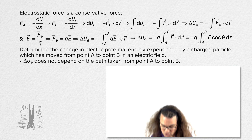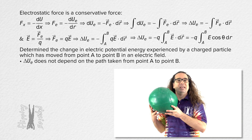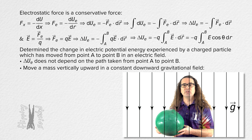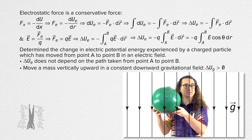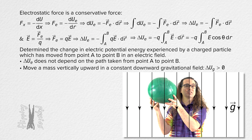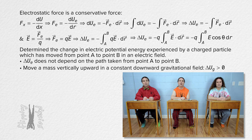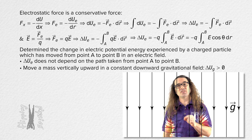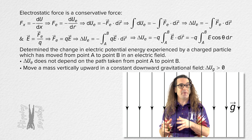To make a comparison to gravitational potential energy: if we lift an object vertically upward in a constant downward gravitational field, it will experience a positive change in gravitational potential energy — I have increased the gravitational potential energy of this mass. If I let go of the mass, it accelerates downward, in the direction of the gravitational field. Conservation of energy says that gravitational potential energy of the mass will decrease and the kinetic energy of the mass will increase.